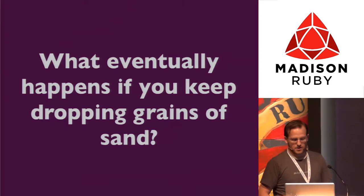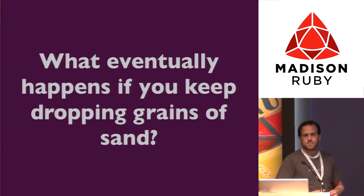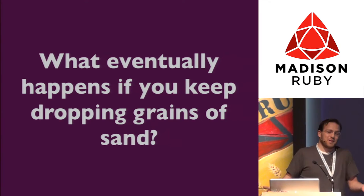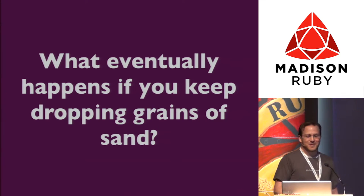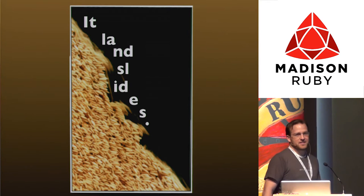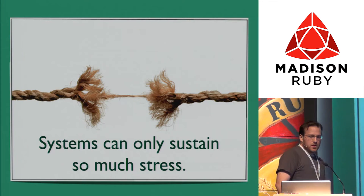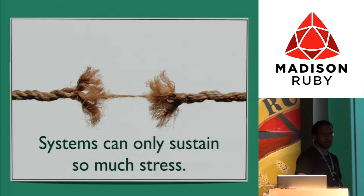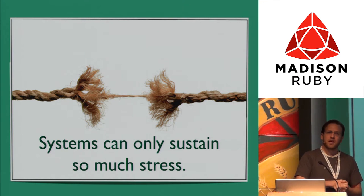My question to you is: as you continue to feed the system, what eventually happens? You get a bigger pile of sand—that's correct. There's a second answer though. Yeah, it landslides. It's inevitable; it's always going to happen as long as you keep feeding that system. The landslide is a stress reducer for the sand pile, and it happens automatically. The system can only sustain so much stress, and then it's got to do something to reduce that stress.